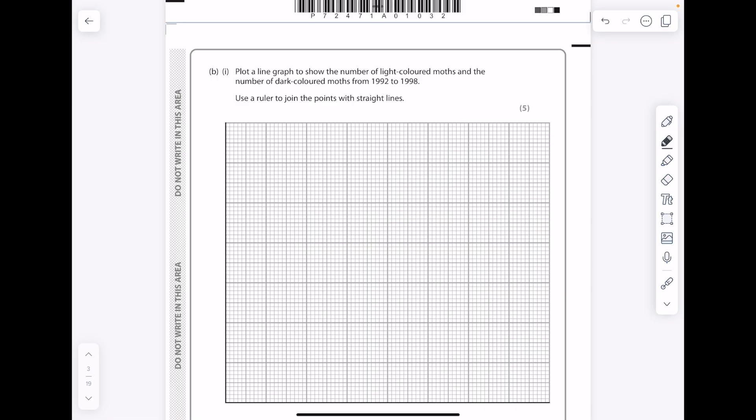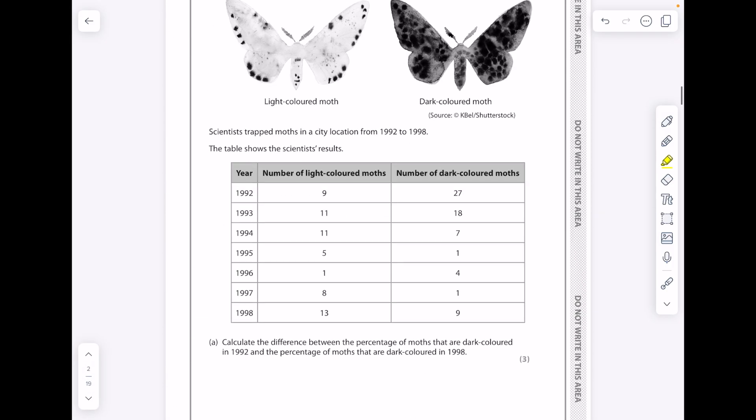I'm now going to show you how to draw a line graph. So that's for continuous data, to show the number of light-colored moths and number of dark-colored moths from 92 to 98, using a ruler to join the points with straight lines. So this is a very typical example. Remember, as I've just said, your dependent variable, so what you measure.